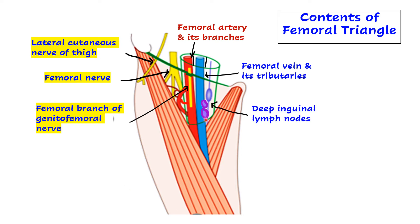We will also have lymph nodes. These lymph nodes are present deep to the deep fascia, which is why they are called deep inguinal lymph nodes - in contrast to the superficial inguinal lymph nodes which are in the roof. These are the contents of the femoral triangle.